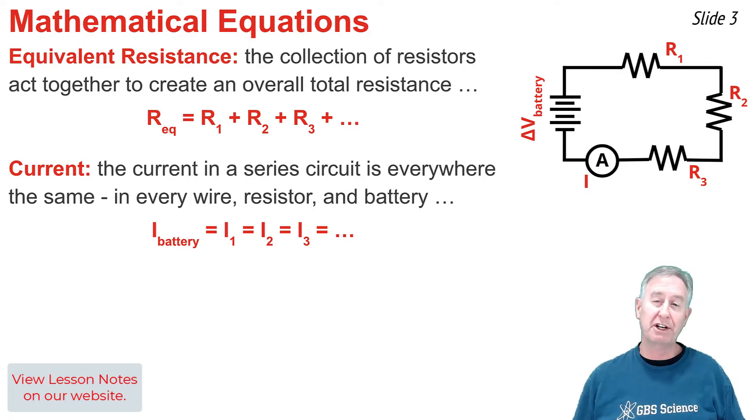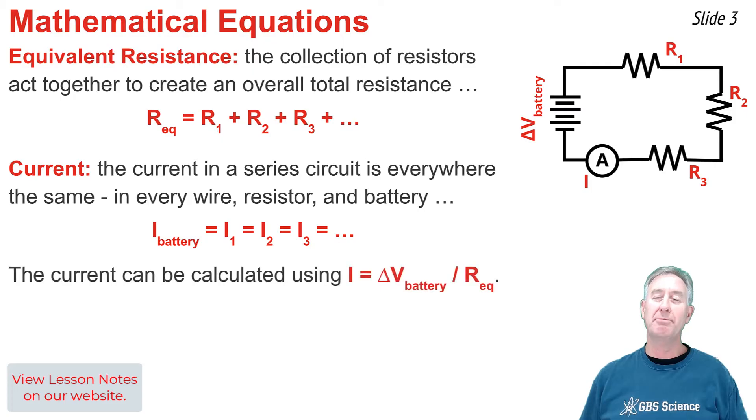The current in a series circuit is everywhere the same. It's the same in the battery as it is in each of the resistors as it is in every wire, and we can calculate this current by taking the battery voltage and dividing it by the equivalent resistance. This gives us the current in the battery, and since current's everywhere the same, it also gives us the current in every resistor.